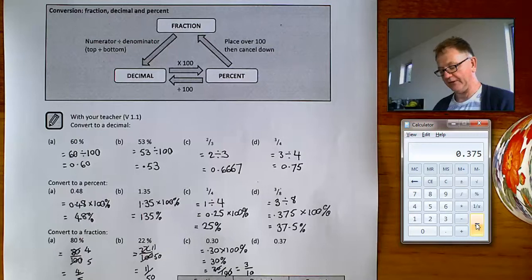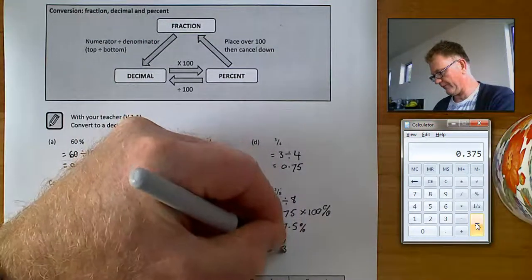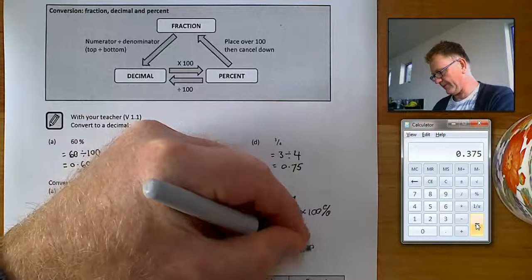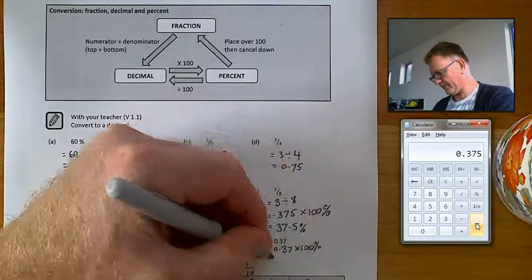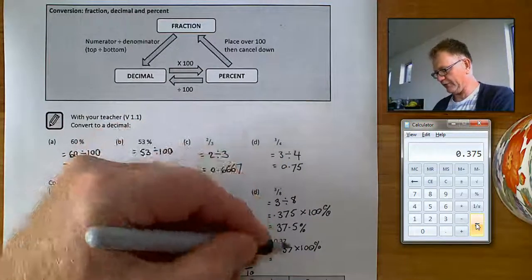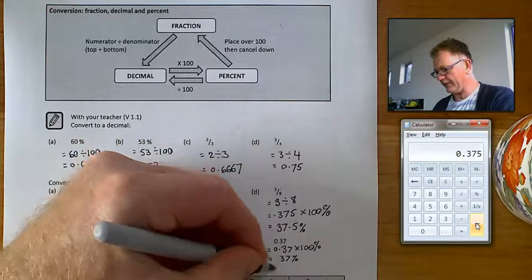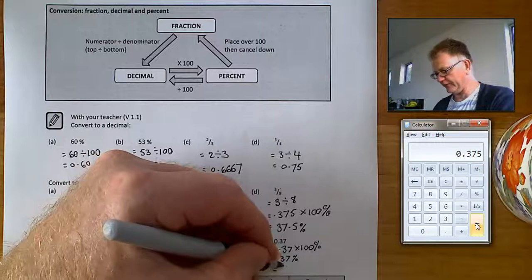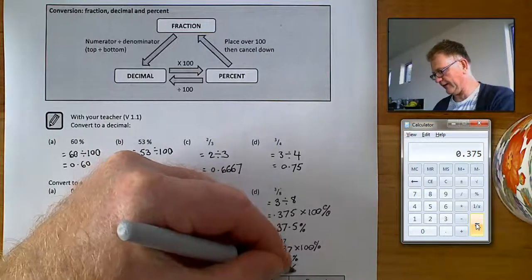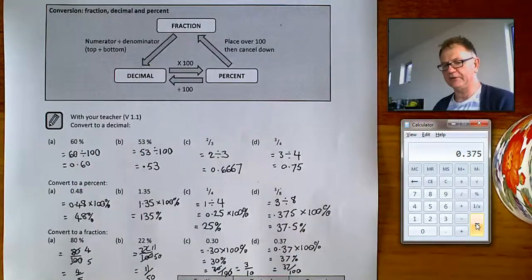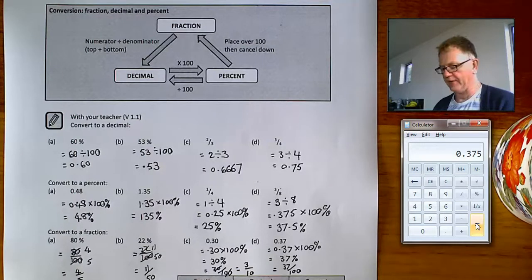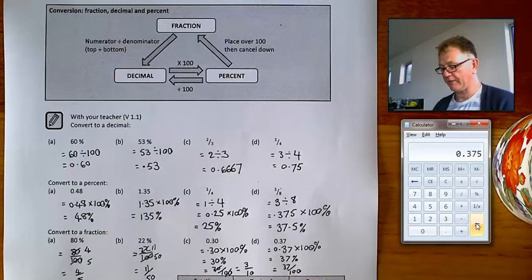For 0.37, convert it to a percentage by multiplying by 100, giving 37%. Write that as a fraction: 37% equals 37 out of 100. Is there anything that divides into both 37 and 100 to cancel it down? No — so 37 over 100 is as simple as it gets. Have a go at questions like that from the back of the book.